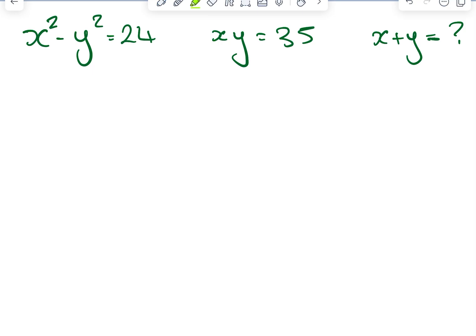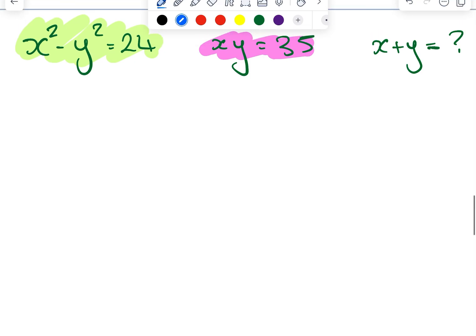So here's the setup, we've got x squared minus y squared equals 24 and we're also told that x times y is 35. We are asked to find the value of x plus y.